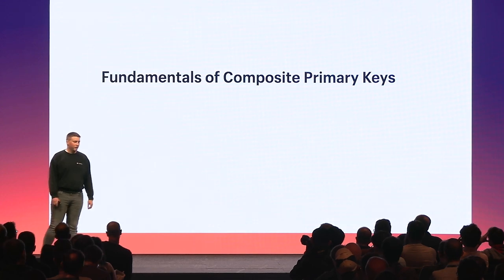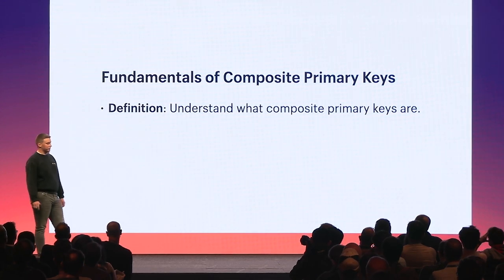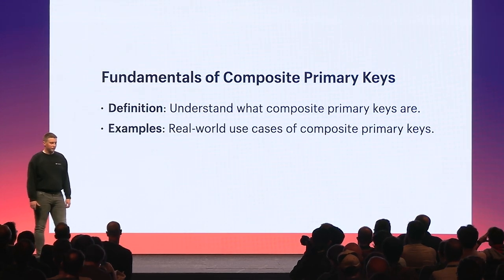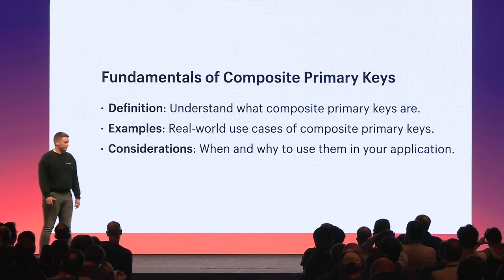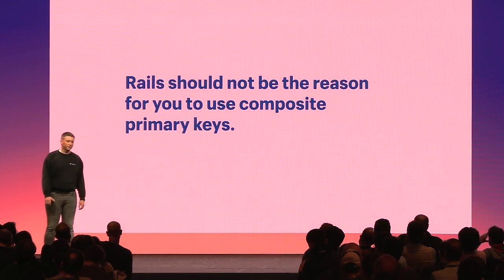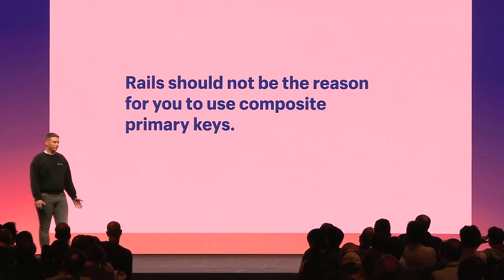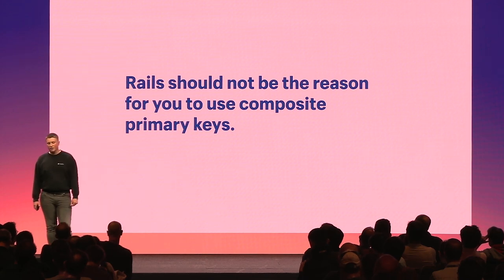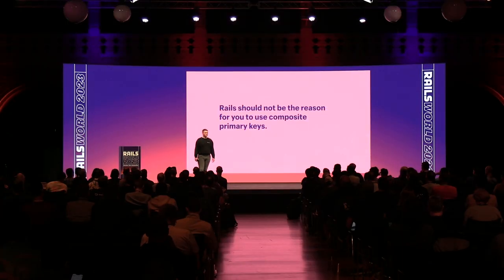Let's begin with fundamentals. I'd like to cover the definition of a composite primary key, a real-world use case, and considerations for when and why you might use it in your application. I want to underscore that having the capability to utilize composite primary keys doesn't necessitate its use in every case. The decision should be driven by your database schema design, and when that decision is made at the database level, you can rest assured Rails will be there to support it.